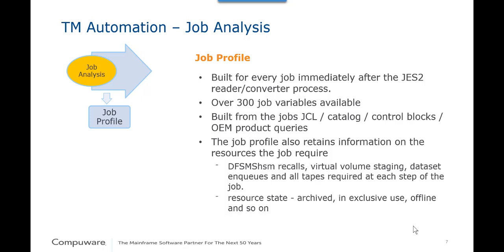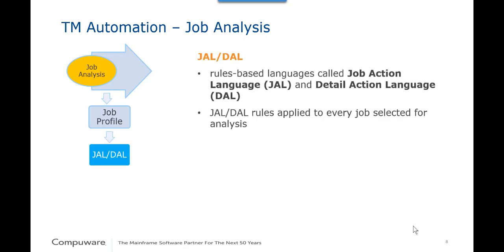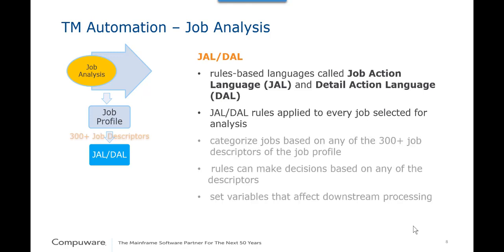It knows about migrated datasets, virtual volumes, dataset enqueues, and all tapes required for each step of the job, as well as knowing whether the resources are archived, in exclusive use, offline, and so on. TM then makes the job profile information available to JAL-DAL, a powerful set of Throughput Manager rules. JAL and DAL are the job-in-detail rules-based action languages, and their rules are applied to every analyzed job. These rules query the job profile information, categorize the jobs, and make decisions that streamline batch processing and set the trajectory for each job.